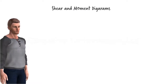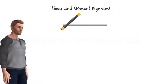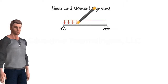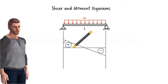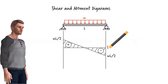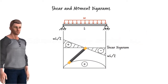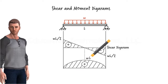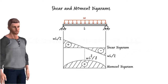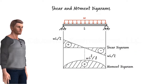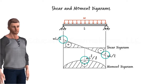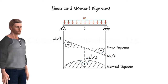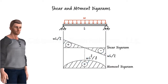Shear and Moment Diagrams. Previously we talked about shear and moment in beams and how to represent them using algebraic equations. In this lecture we're going to focus on their graphical representations, also called shear and moment diagrams. Such diagrams allow us to quickly and accurately determine the locations at which shear and bending stresses are maximum or minimum, and visualize how the stresses vary across the beam — an ability that plays an important role in structural design.